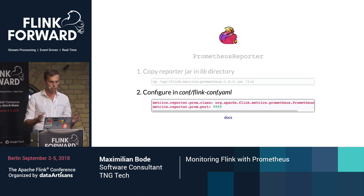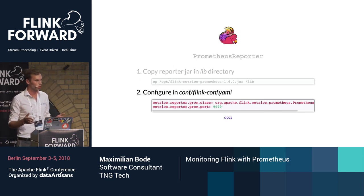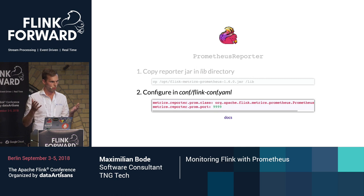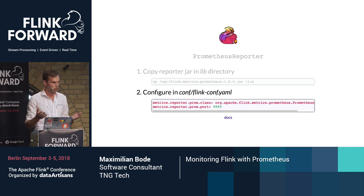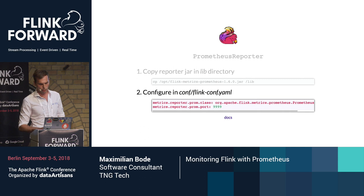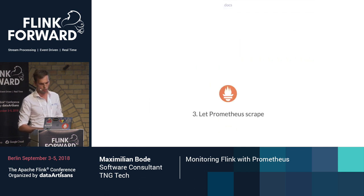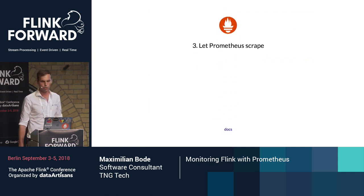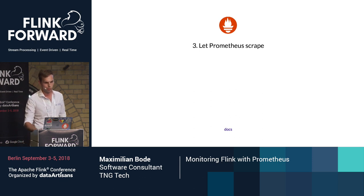Now all your job managers and task managers expose these metrics in this simple text format via HTTP. Now you just need to tell Prometheus where to scrape. There are several options.